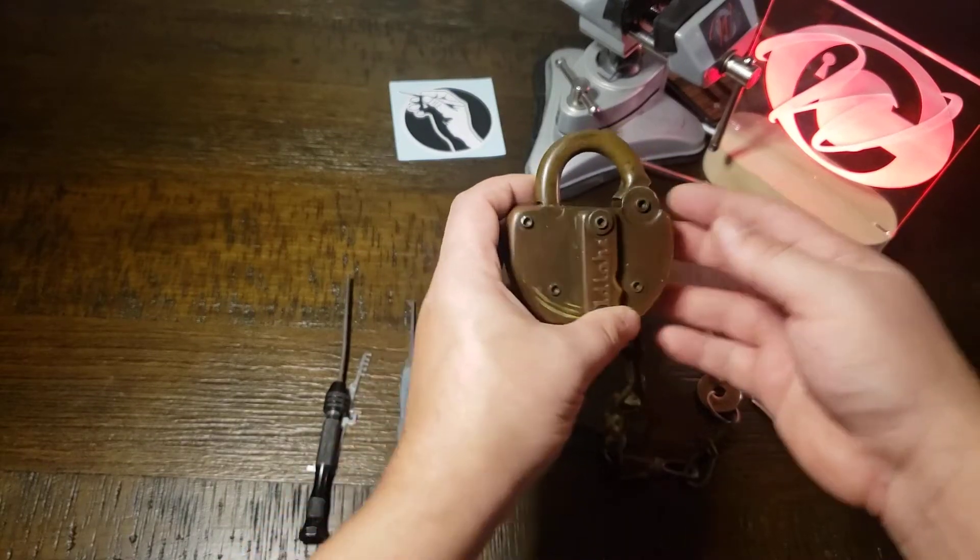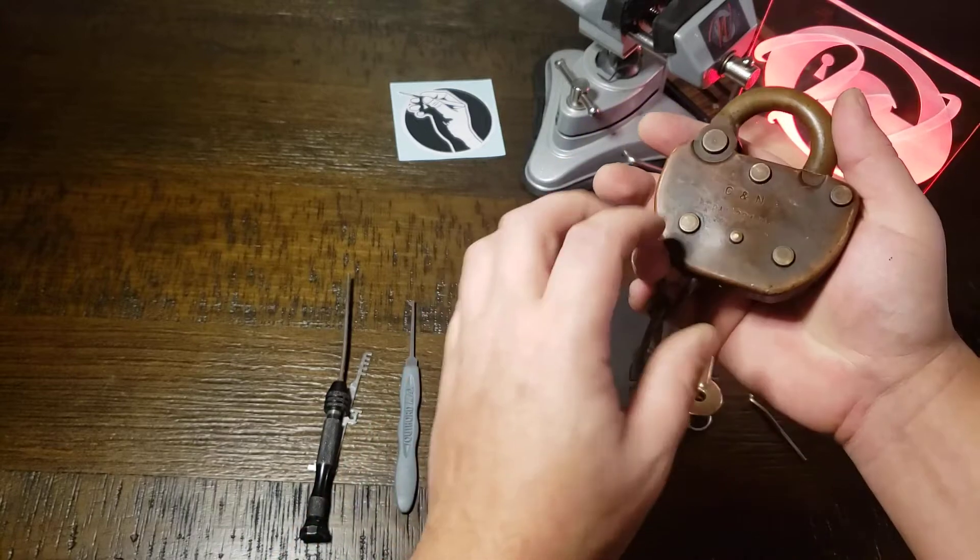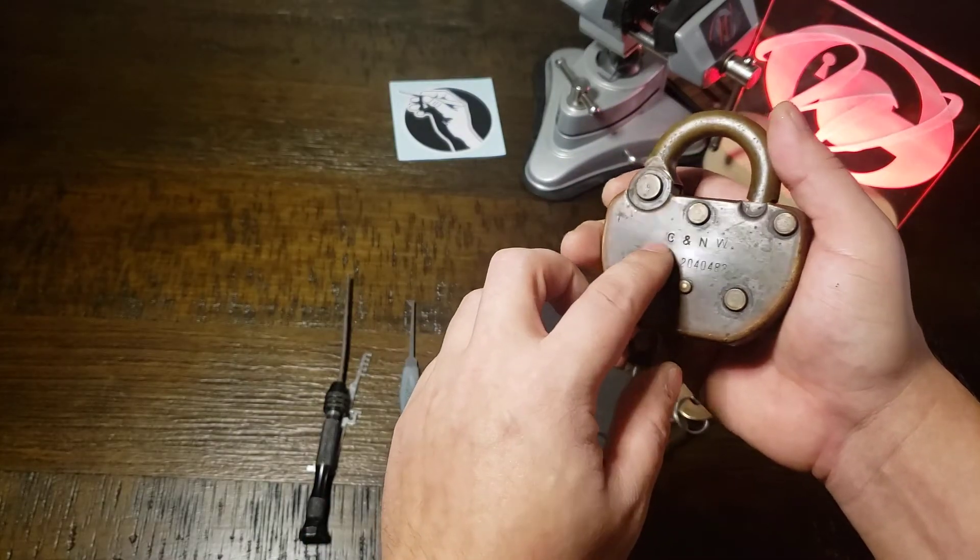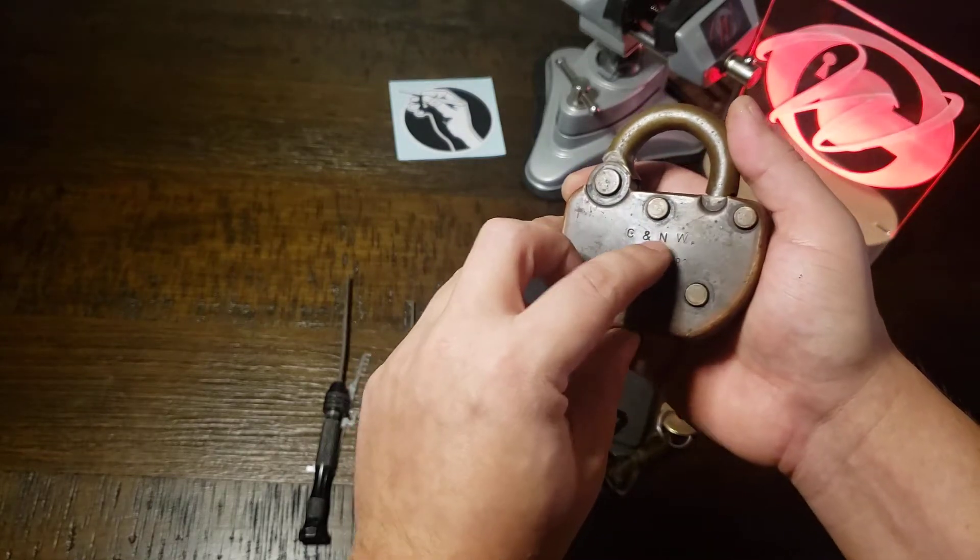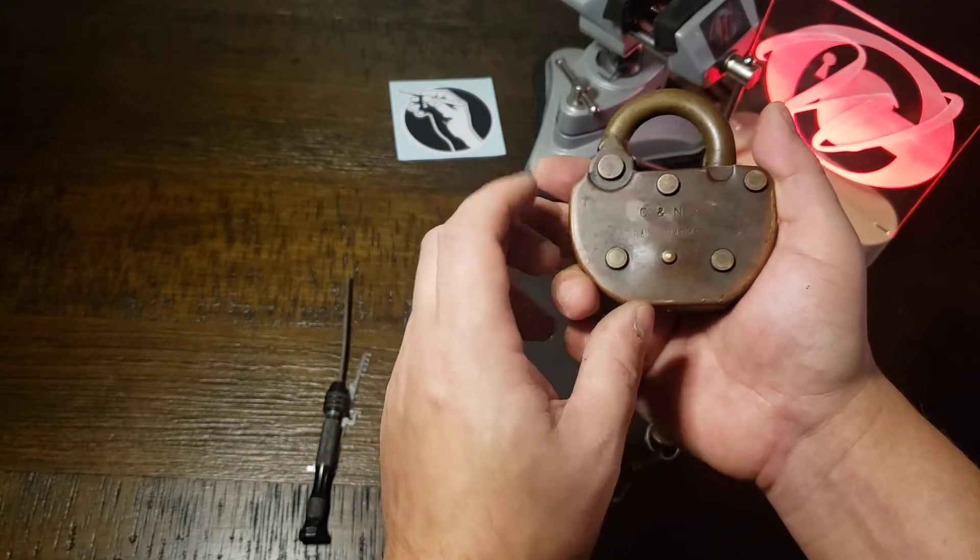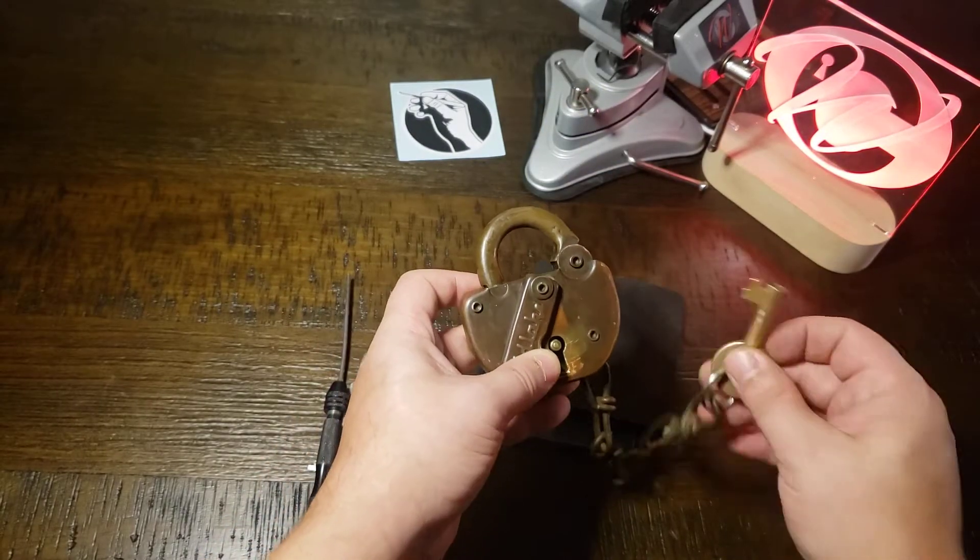This is Culver Woodhull and I've got an old Adlake padlock for the railroad. I think this is C-N-N-W, maybe Northwest, so Cincinnati maybe. If you know, let me know. It'd be pretty cool to know the origins of this lock.